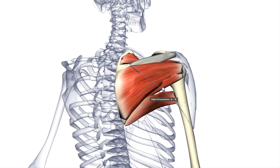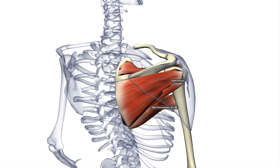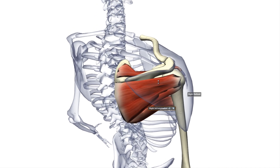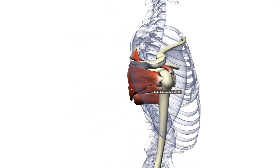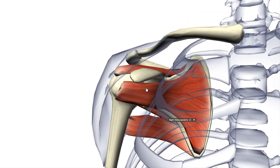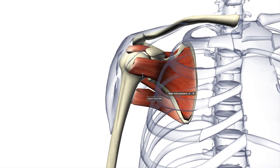Now remember we had the teres minor that adducts and we have the infraspinatus that adducts, and we also had the supraspinatus that abducts the arm. Now I will talk about the subscapularis, which is the last muscle in this video, and that is exactly this muscle here.